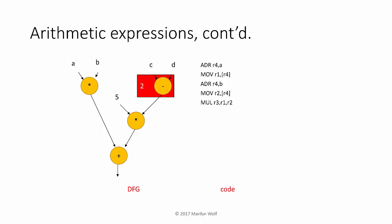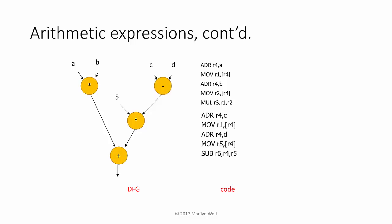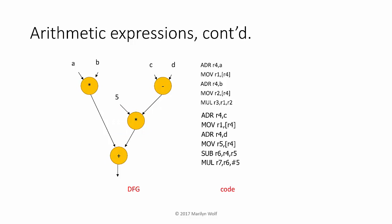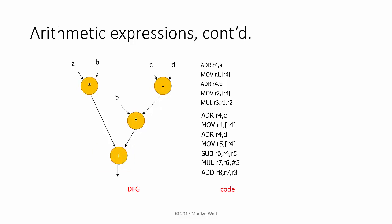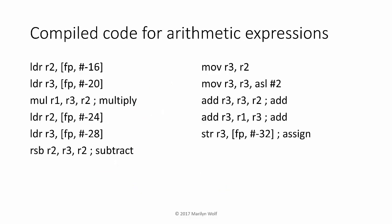We then move on to the node C minus D and generate that code. Now that we have the inputs to the multiply, we can generate that code. One value is a constant; the other is a value that we already generated and have in a register. And finally we perform the addition at the end. Here is code generated by a compiler for this same expression — this is more optimized code that also uses the stack frame to hold variables, accounting for the references to FP.